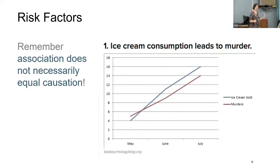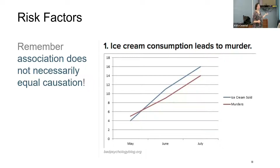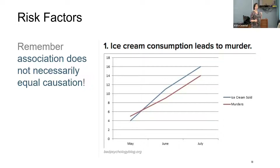When talking about risk factors for any disease, we always have to remember that association does not equal causation. A funny study looked at ice cream sold in the summer and murders — if you just believe that information, you'd think people who buy ice cream commit murders, but that's not the case. We always have to be careful about studies published about causes of Parkinson's disease and look more carefully at the data: is there a true link or just an association?